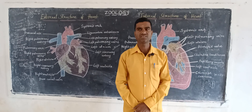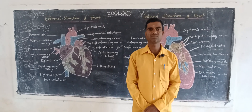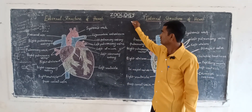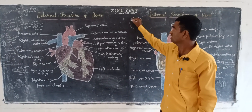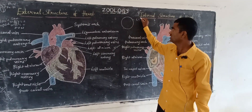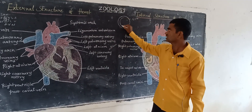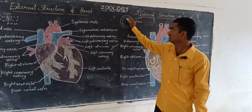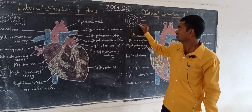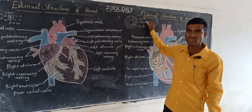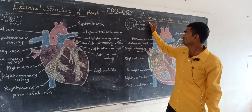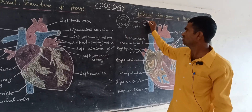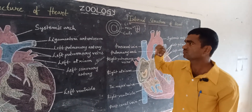The heart contains four chambers. During embryonic development, the embryonic layers are called the ectodermal layer, the mesodermal layer, and the endodermal layer. During the embryonic mesodermal layer stage, it further forms the heart, and likewise two atria and two ventricles are formed.